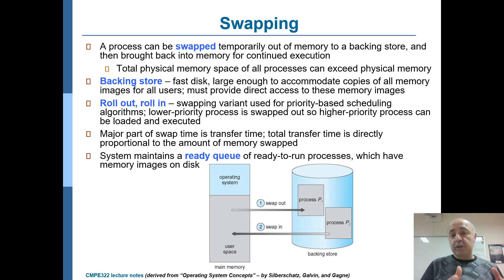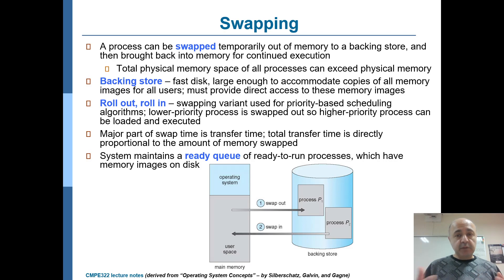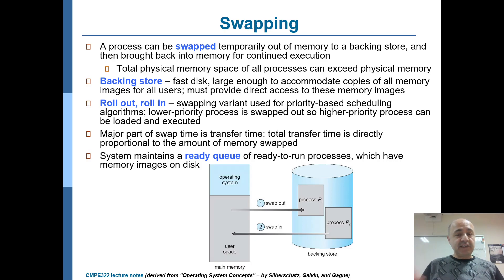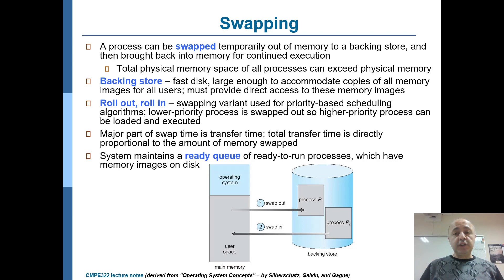I'm not talking about the program — I'm talking about the process. During the execution of the process, the variables have some values, and those values are changing as statements are executed. At some point in time, you take a snapshot of that process onto the disk. That means you copy the binary image of that process from memory onto the disk, into the swap partition, into the backing store.